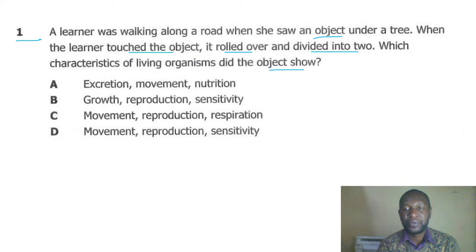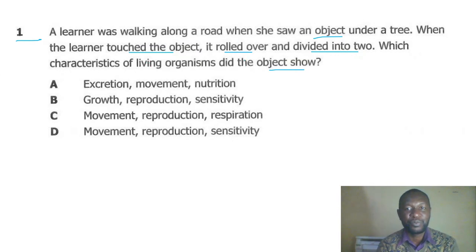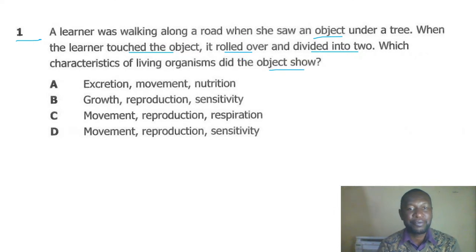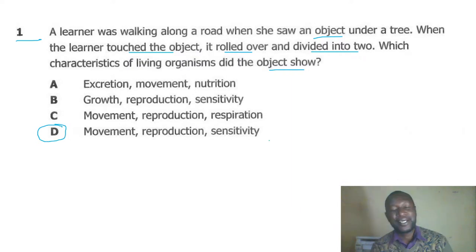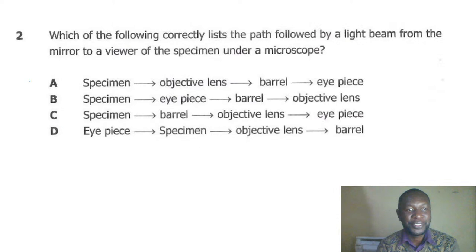The correct answer is D. The object was touched — that is sensitivity. It rolled over — that is movement. It divided into two — that is binary fission, which is reproduction. So the correct answer is D: movement, reproduction, sensitivity.